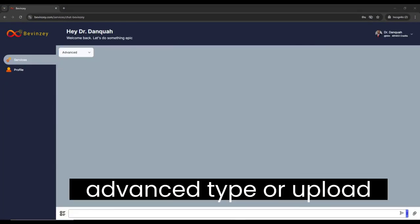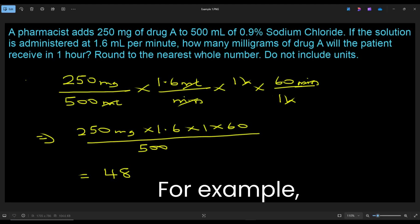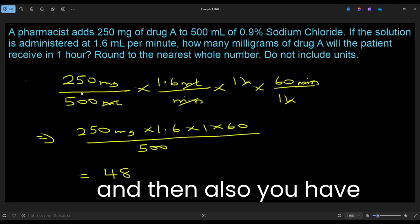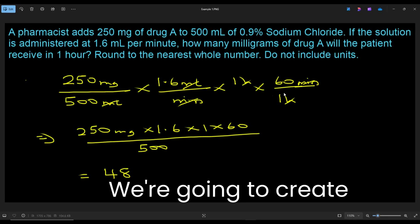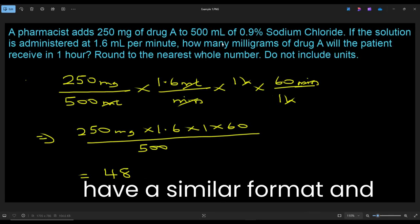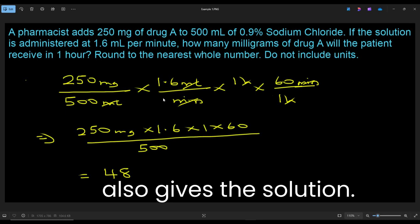change the model to advanced, then type or upload your question. For example, I'll be using this particular question. You have the question and the solution. We're going to create multiple questions that have a similar format and also give the solution.